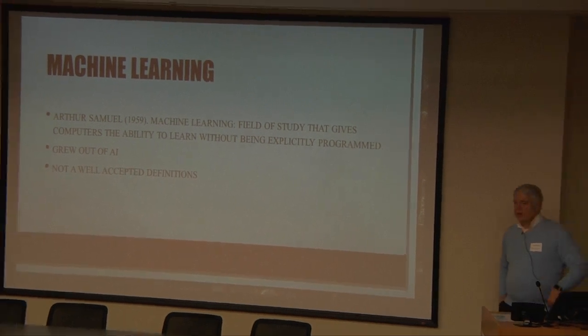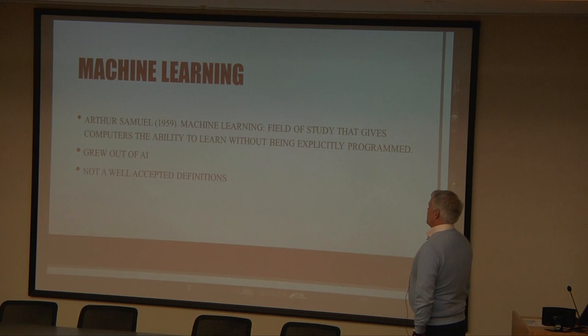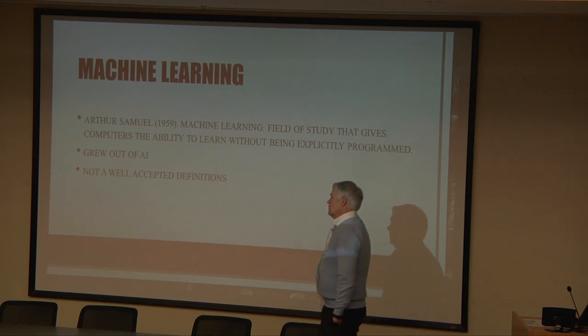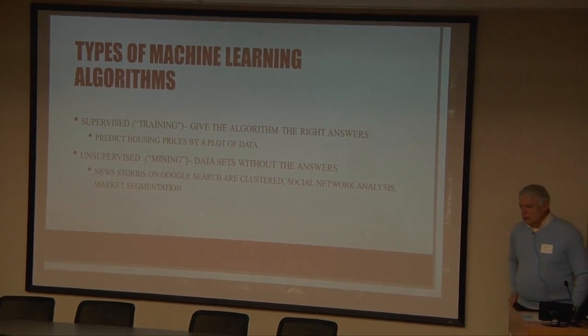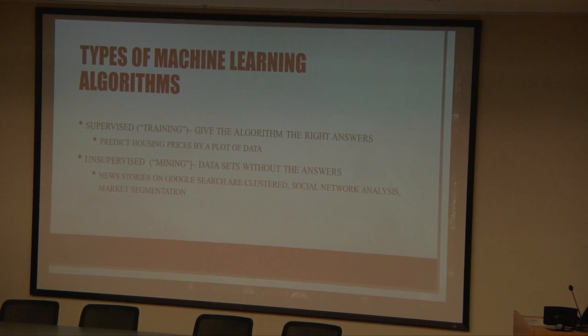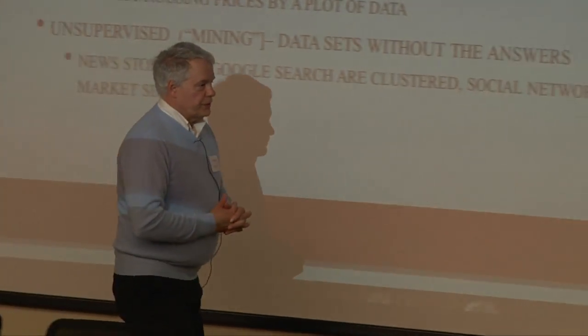Here's an old definition of machine learning from 1959: 'Field of study that gives computers the ability to learn without being explicitly programmed.' It actually grew out of AI, artificial intelligence. There really isn't a truly accepted definition, but what we're trying to accomplish is to get the computer to do what you would have done when looking at some facts or data. By the way, the term machine learning is also called statistical learning in some circles.